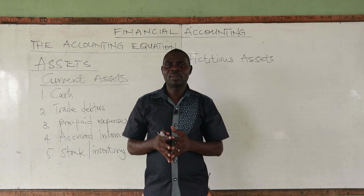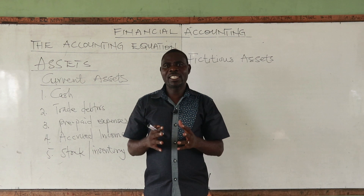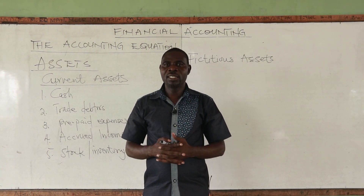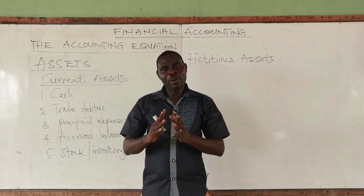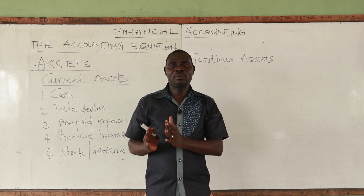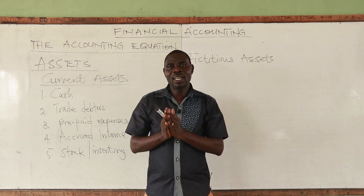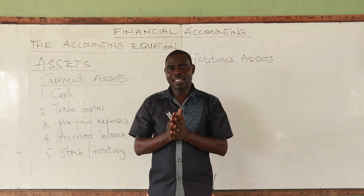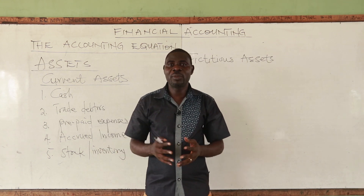Fictitious assets are actually expenses in nature. They come about as a result of unusual expenses incurred by the business. An example is expenses incurred prior to the formation of a business — called preliminary expenses. These expenses are normally very large, so they are classified as a capital item rather than deducted from profit in one year, and are written off year after year.